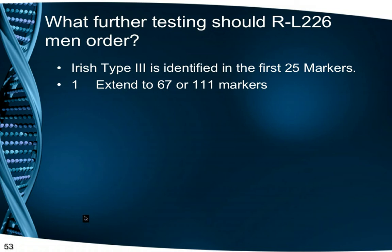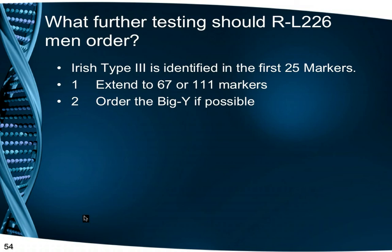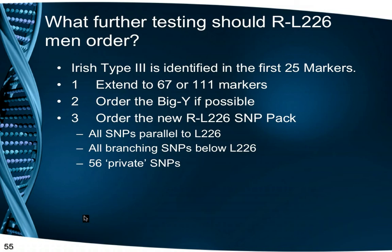So what further testing should L226 men order? An Irishman can be identified in the first 25 markers. I would recommend extending to 67 or 111 markers, and if you can afford it, the Big Y test will identify all your private SNPs and perhaps show matches to other testers' private SNPs, identifying new branches. This year, FTDNA released a SNP pack designed expressly for Irish Type 3. It tests all SNPs parallel to L226, all known branches below it and 56 private SNPs found in our L226 Big Y testers. These are only a small selection from the 300-odd private SNPs discovered to date, and individual private SNPs can only be found using Big Y or Y Elite.